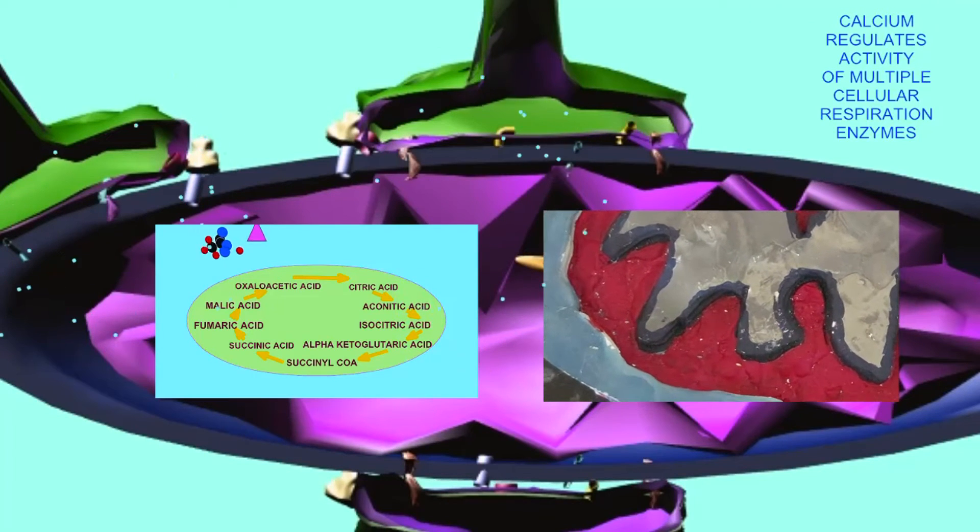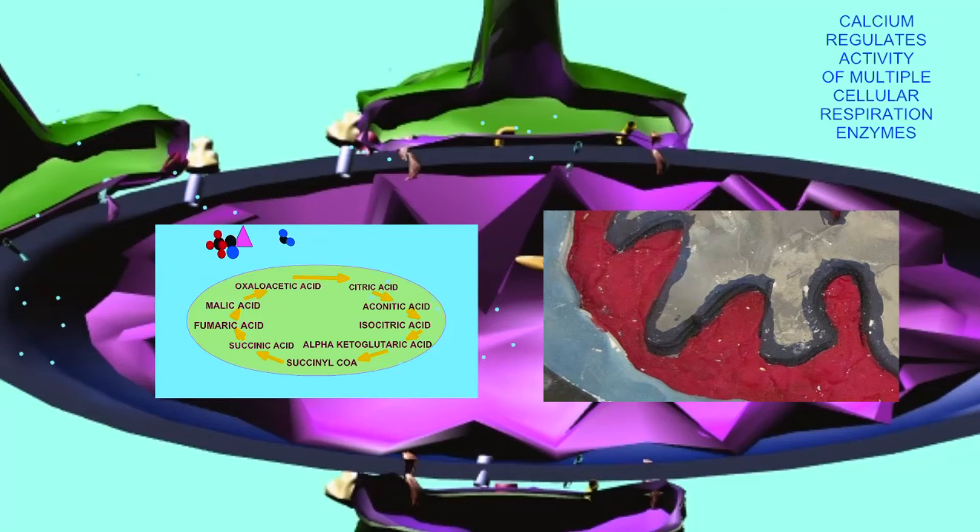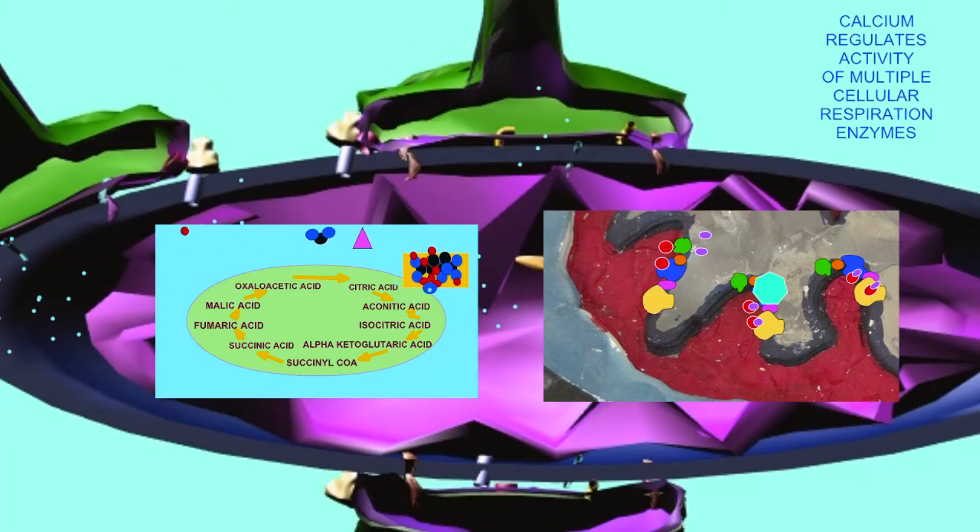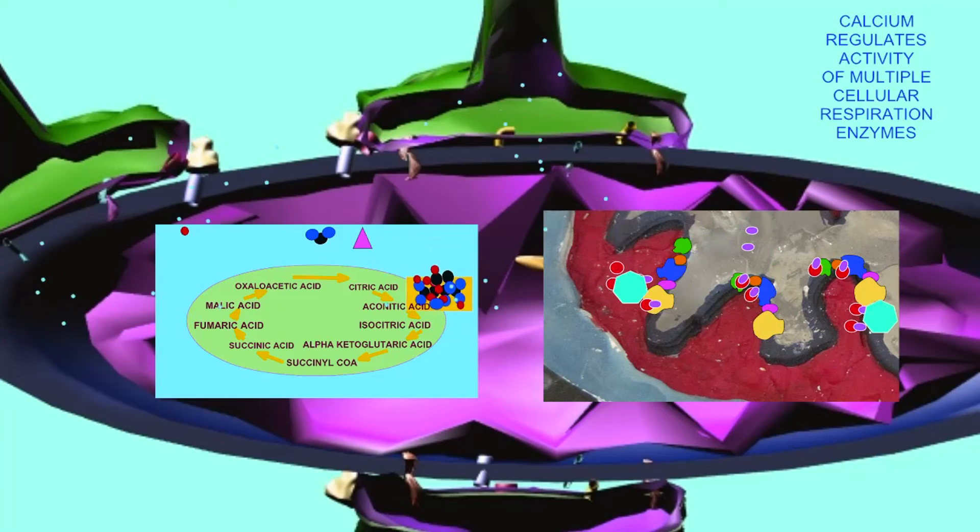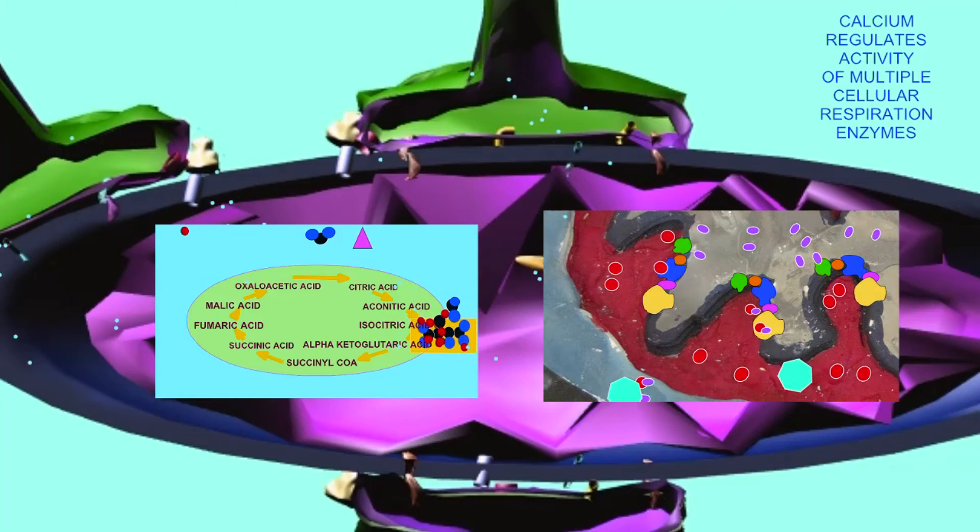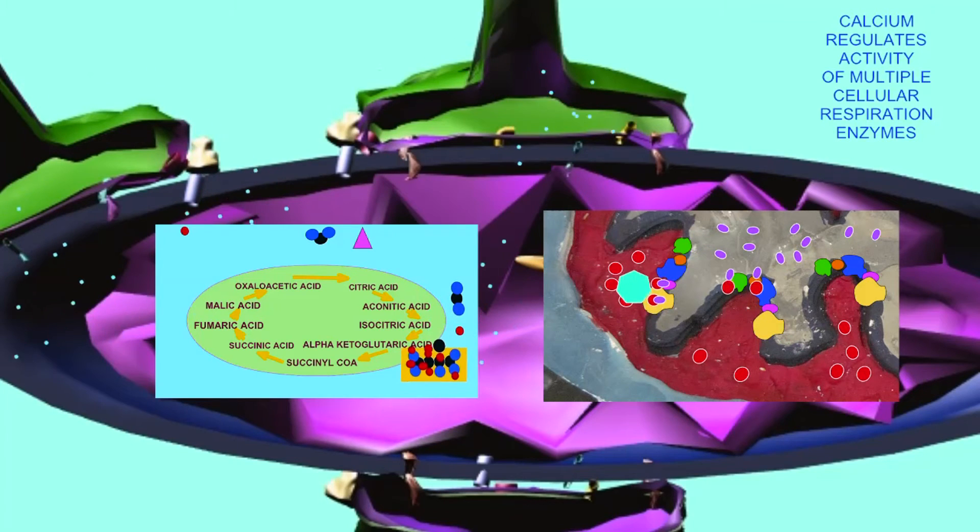Calcium is required for multiple enzymes of cellular respiration pathways and regulates the rate of ATP production. Thus, the endoplasmic reticulum can alter the production of ATP by altering the release of calcium at the mitochondria-associated membranes for uptake into the mitochondria.